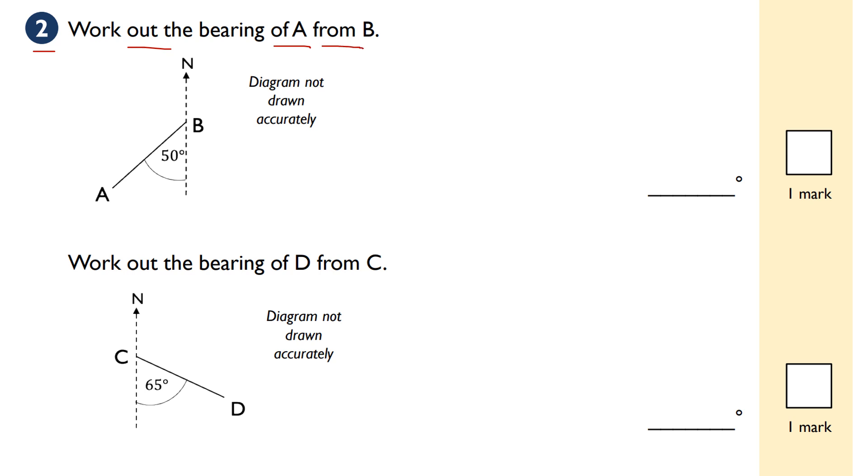It's a vertical line going upwards - that's the north line. The next rule is that it's always three figures, a three-figure degree angle. Thirdly, you'll be referring to angles on a straight line and angles around a point.